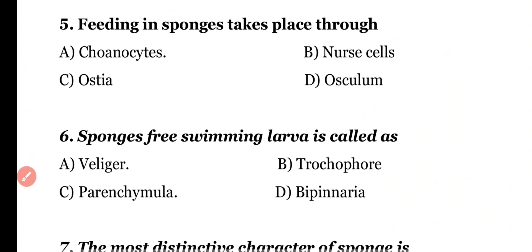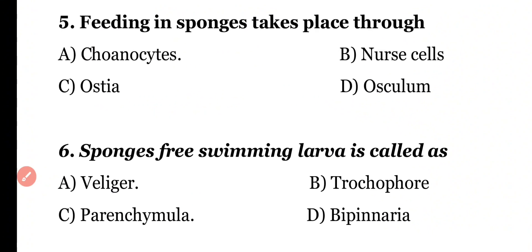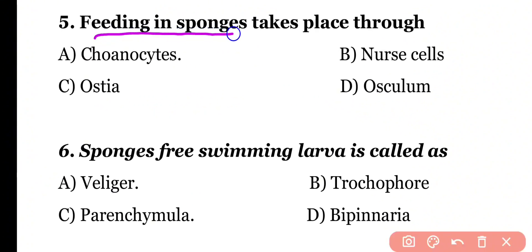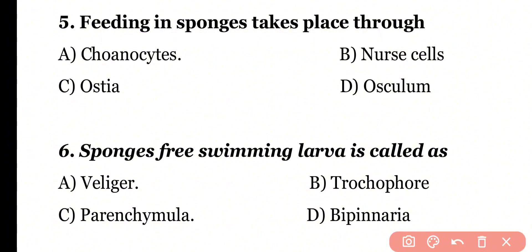Question number 5. Feeding in sponges takes place through: choanocytes, nerve cells, ostia, or osculum. Correct answer is option A. Feeding in sponges takes place through choanocytes cells.